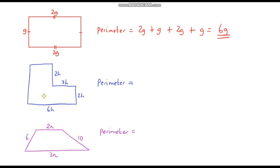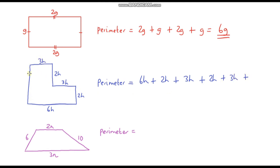Moving on to the L-shape: we start with the base 6h, add 2h, then 3h, then 2h. The missing horizontal side is 6h minus 3h, which is 3h. The full height is composed of 2h plus 2h, giving 4h. Adding all h terms: 6 plus 2 plus 3 plus 2 plus 3 plus 4 equals 20. So the perimeter is 20h.